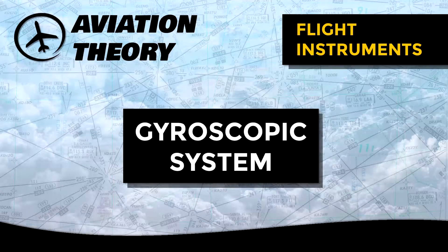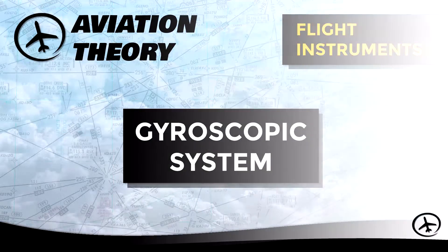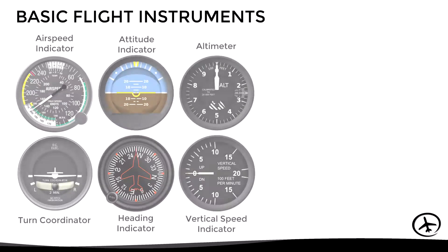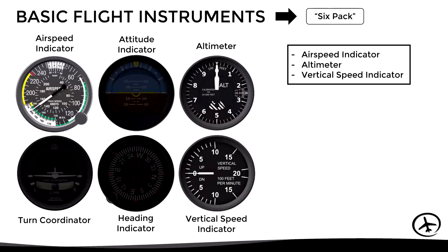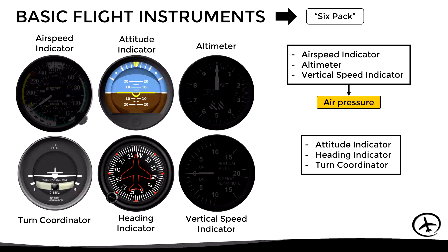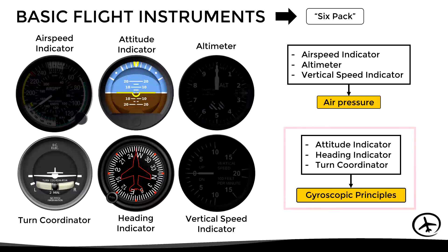Today we will talk about the gyroscopic system, which is used in some of the basic flight instruments, also known as the six pack. As we know from previous videos, the airspeed indicator, the altimeter, and the vertical speed indicator use air pressure to give their indications by means of the pitot-static system. The attitude indicator, the heading indicator, and the turn coordinator use gyroscopic principles to give their readings by means of the gyroscopic system, which we will discuss in this video.